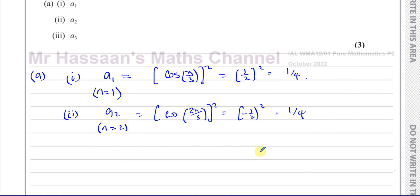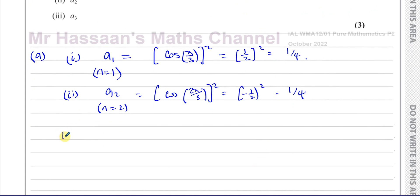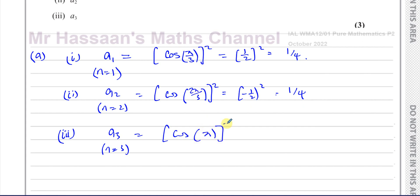For part 3, A3 is when N equals 3. So we have the cosine of 3 pi over 3, which is pi — the cosine of pi all squared. The cosine of pi is negative 1, so this is negative 1 squared, which gives you 1. So we have A1 = a quarter, A2 = a quarter, and A3 = 1.